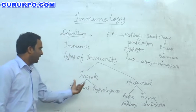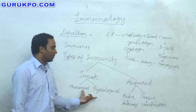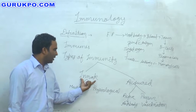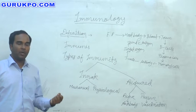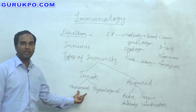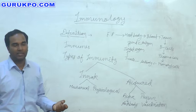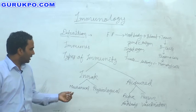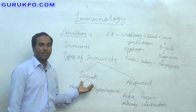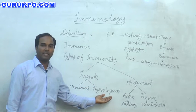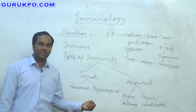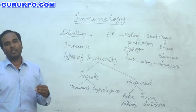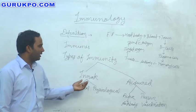Innate immunity has two different types of barriers in our body. There are many mechanical barriers in the host body, like the calcium-potassium channels on the cell membrane, which also provide innate immunity. Physiological barriers like mucus, and the excretion of acids during digestion in the alimentary canal, also provide innate immunity.